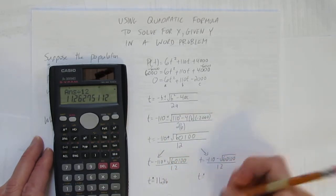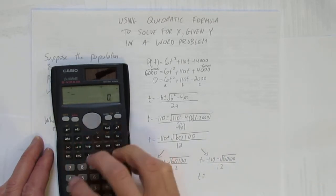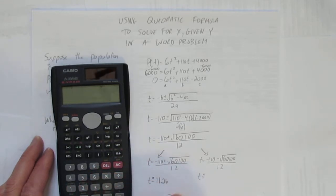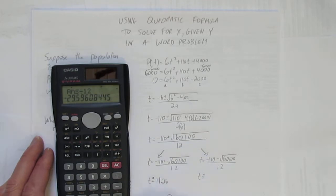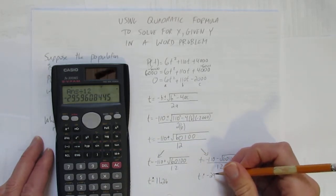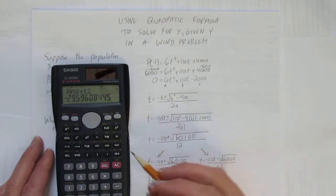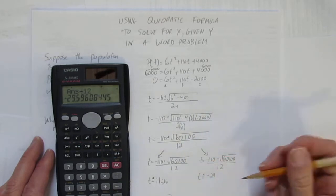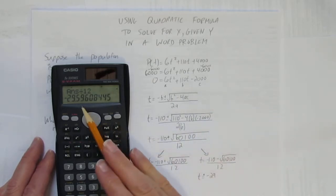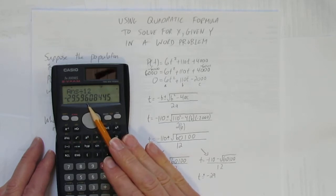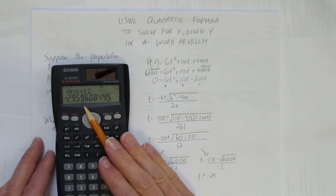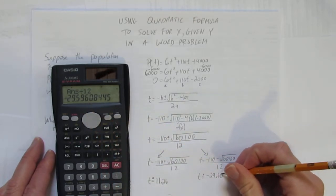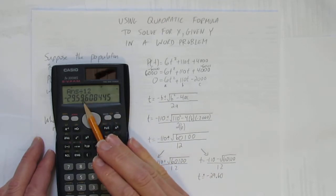And t is approximately—now the negative version—negative 110 minus the square root of 60,100, divided by 12, equals negative 29.596. I'm rounding to two decimals, so with the 6, this rounds to negative 29.60.